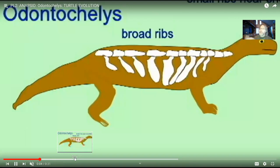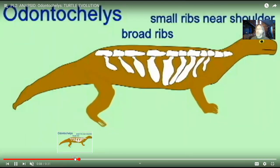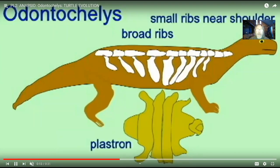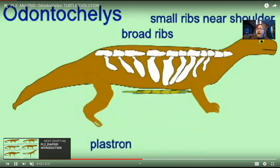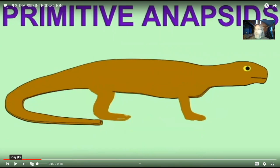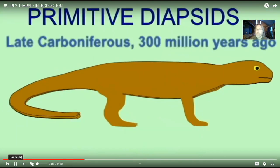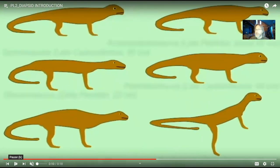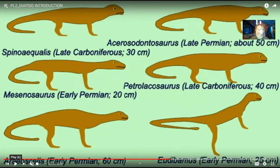If we were to follow the history of the amniotes, different groups have lived at different times, and in all of them we see modification over time — the modern forms do not exist from the very beginning. From the first anapsid reptiles, by the late Carboniferous there are diapsid reptiles. Perhaps they aren't that impressive at first — they're small, just like the first reptiles were small — but the diapsids would dominate terrestrial environments for 200 million years.